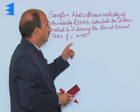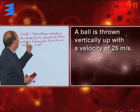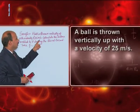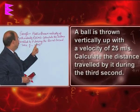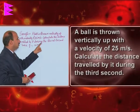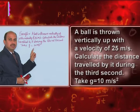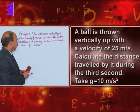See this example here. A ball is thrown vertically up with velocity of 25 meters per second. Calculate the distance travelled by it during the third second. Take g equals 10 meters per second squared.